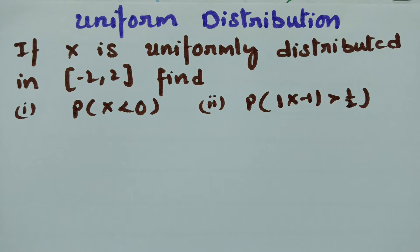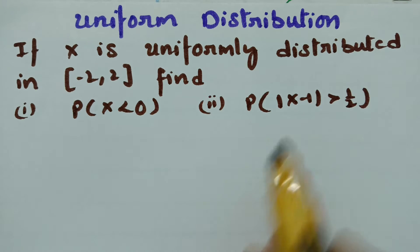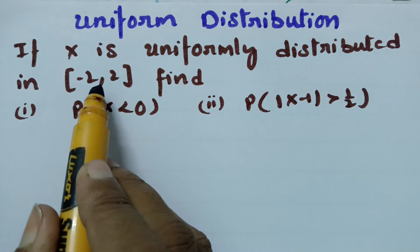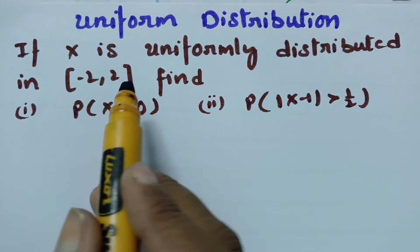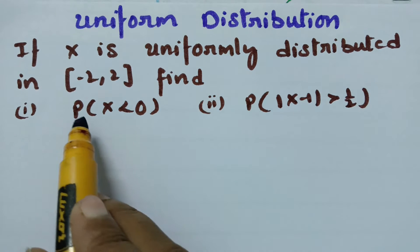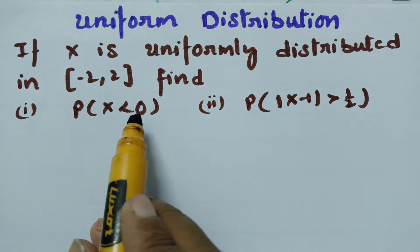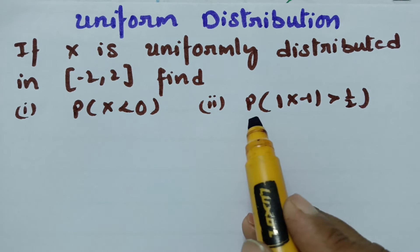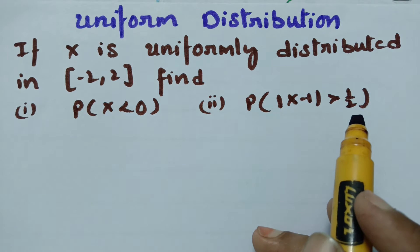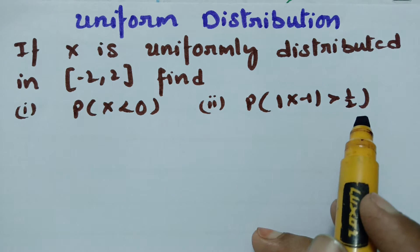Today's video is on uniform distribution. I am going to explain the problem: if x is uniformly distributed in the interval minus 2 comma 2, we have to find out the probability of x less than 0, and the probability of modulus of x minus 1 greater than half.